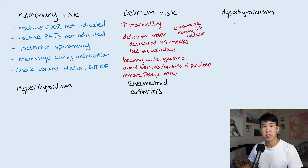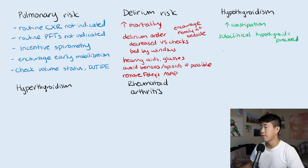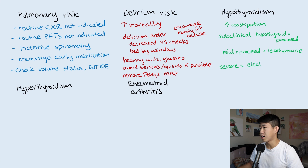Hypothyroidism causes increased constipation, decreased metabolic rate, and decreased wound healing. For subclinical hypothyroidism, proceed to surgery. For mild hypothyroidism, proceed but treat with levothyroxine. For severe hypothyroidism, if elective delay surgery until euthyroid; if urgent or emergent, give IV T3 and T4 and proceed.